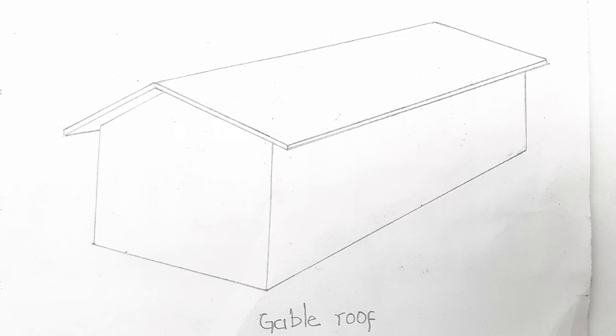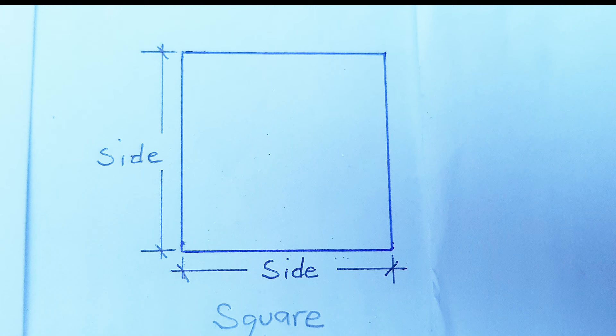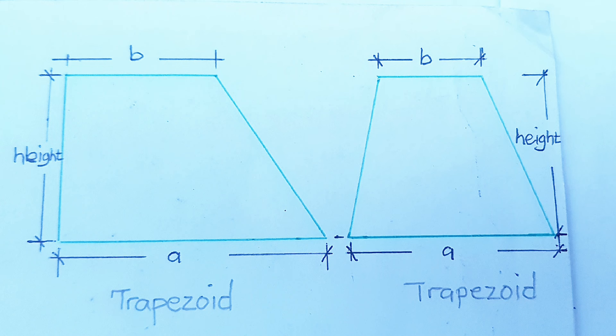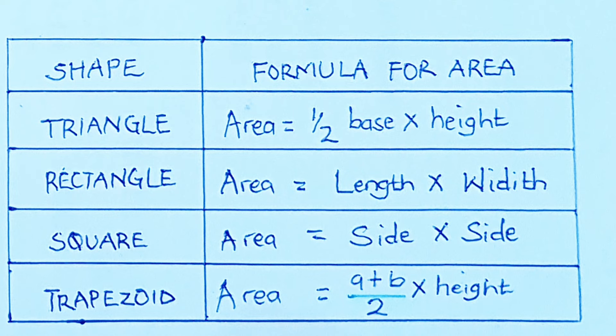Roofs have different shapes including the rectangle, square, triangle, and trapezoid, so you must know some of these formulas. Area for a triangle: half base times height. Area for a rectangle: length times width. Area for a square: side times side. Area of a trapezoid: (side A + side B) ÷ 2, multiplied by height.